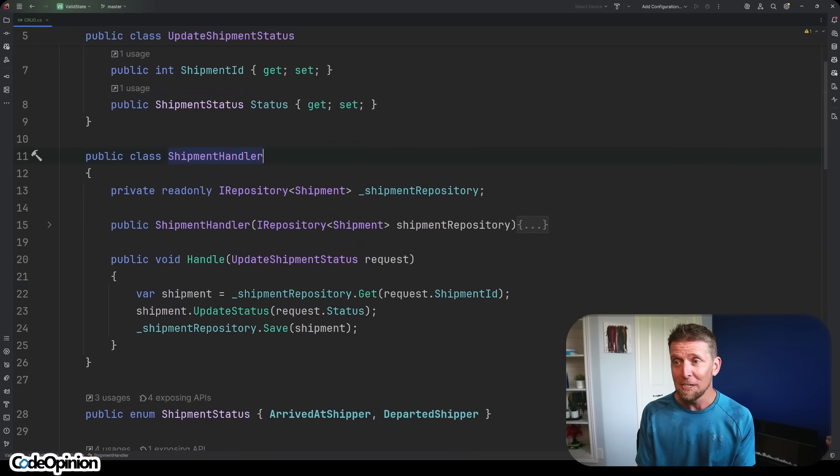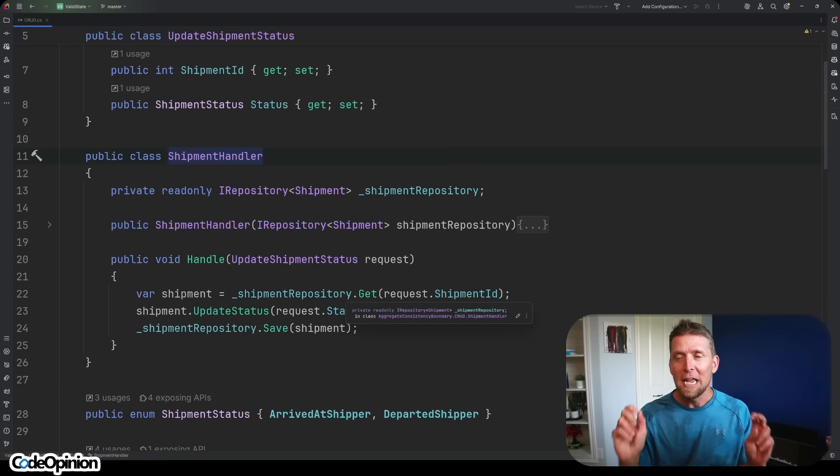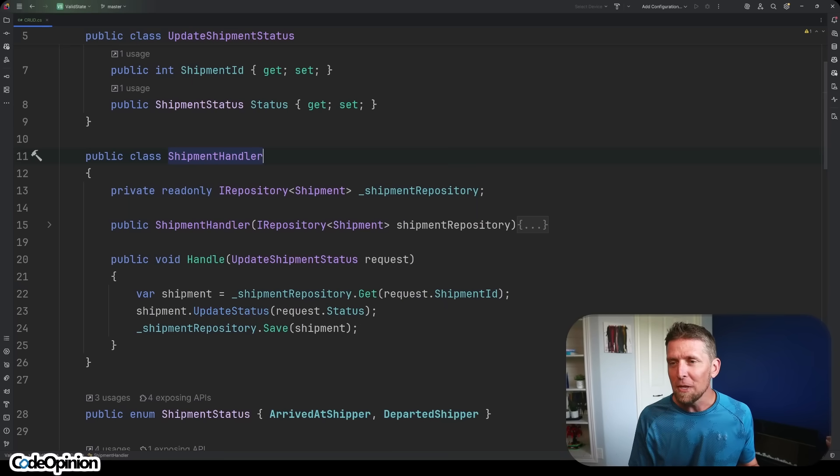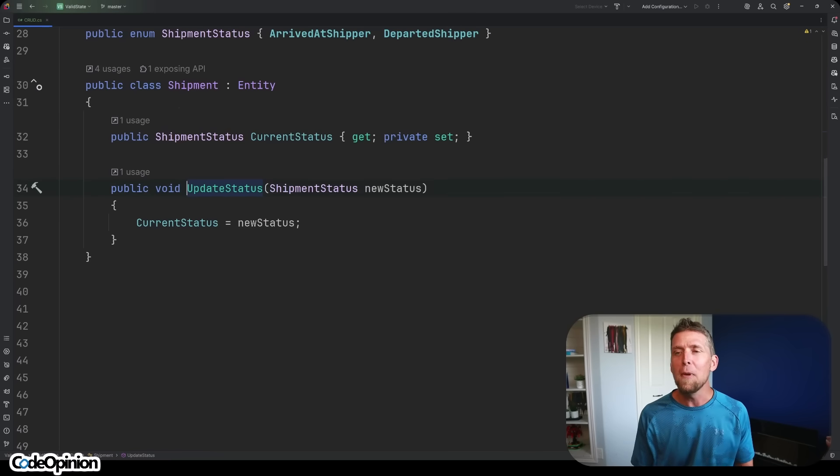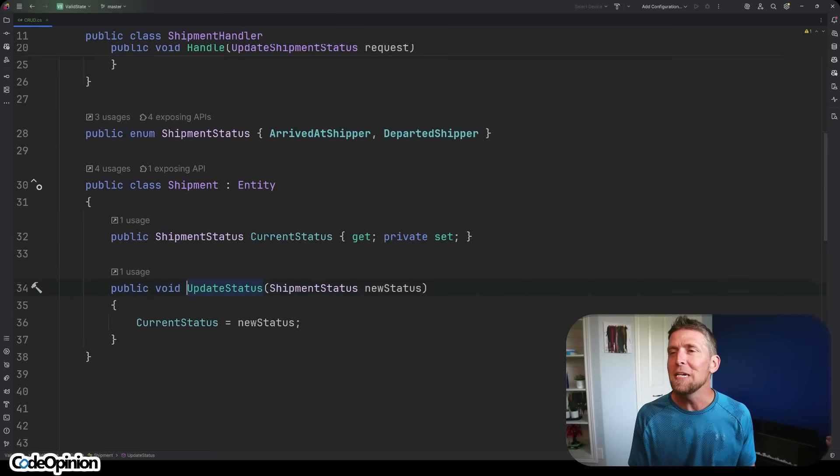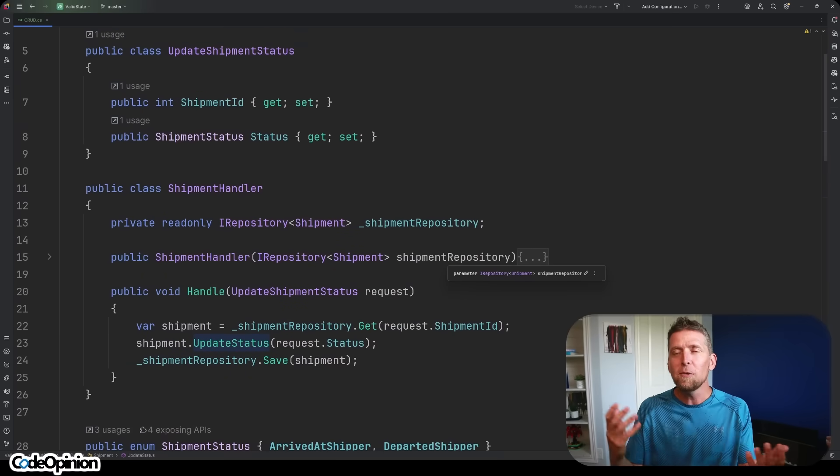If that's the case and all we really do is have CRUD, why are we going to the lengths of having a command, a handler, a repository, a domain entity that's not really, it's really just a data bucket with a method to set a property on it? I don't need to go through all these links. This isn't really doing DDD. This is just trying to apply some patterns.